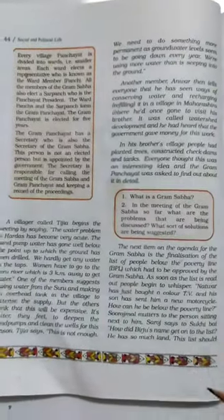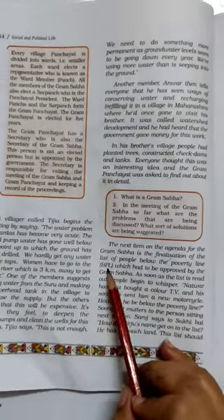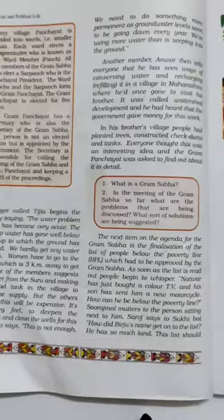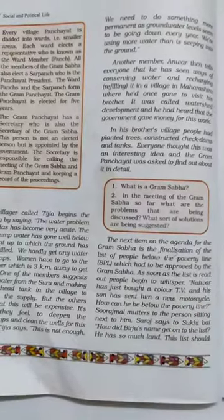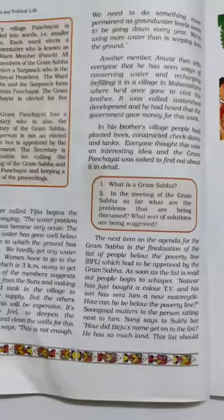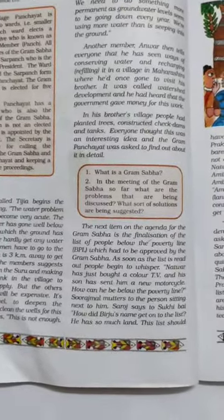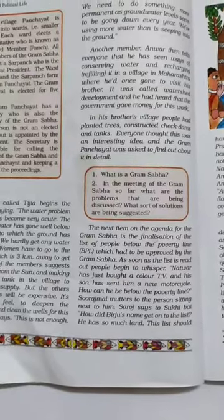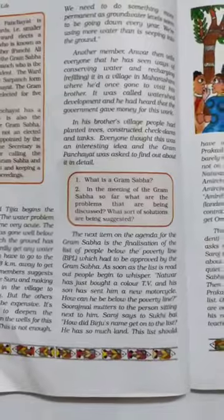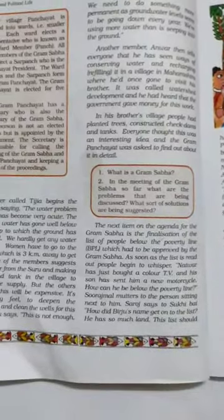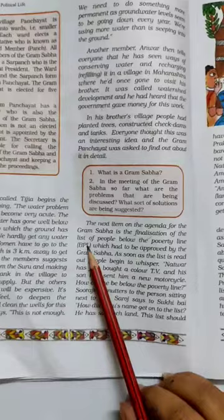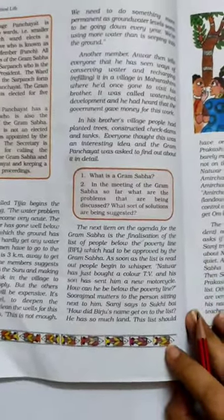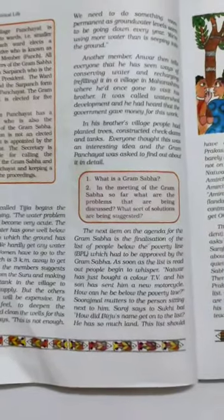दूसरा मसला ये था कि उन्हें गाँव में कितने लोग below poverty line हैं, वो कौन-कौन से लोग हैं, उनकी list बना कर तैयार करनी थी। अब below poverty line क्या होता है? Below poverty line — हमारी government ने हमारी society को economically, मतलब कौन कितने पैसों के हिसाब से, कितनी अच्छी आमदनी कमाता है, उसके हिसाब से divide किया हुआ है। Below poverty line वो लोग होते हैं जिनकी सालाना आमदनी एक लाख अस्सी हजार या उससे कम की है।